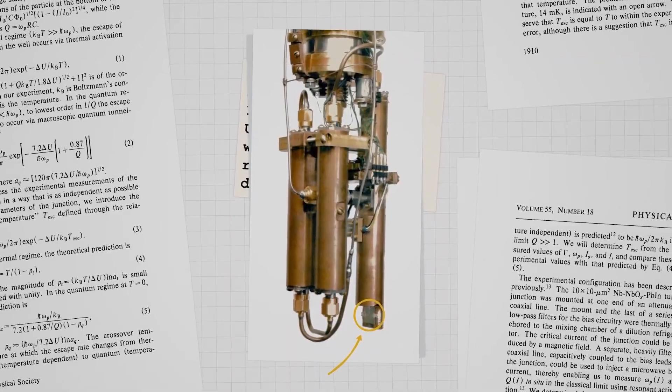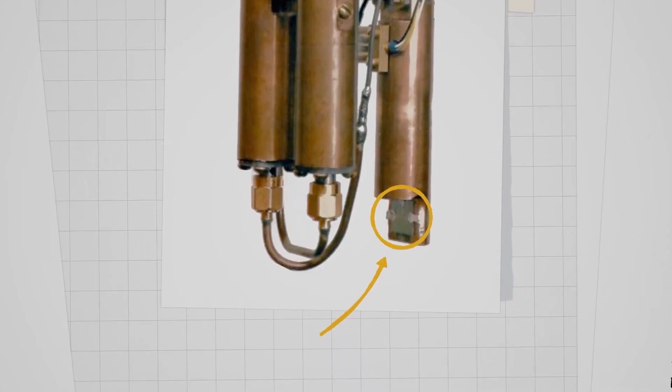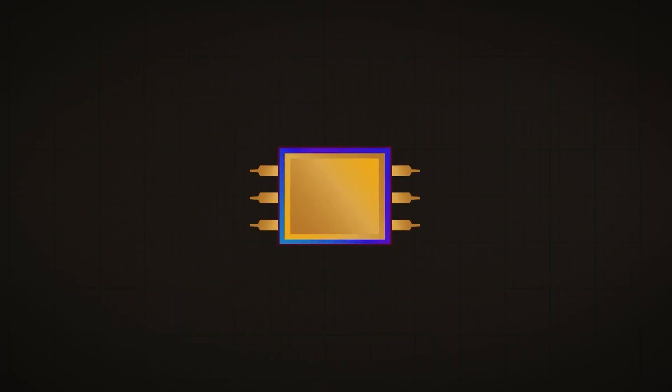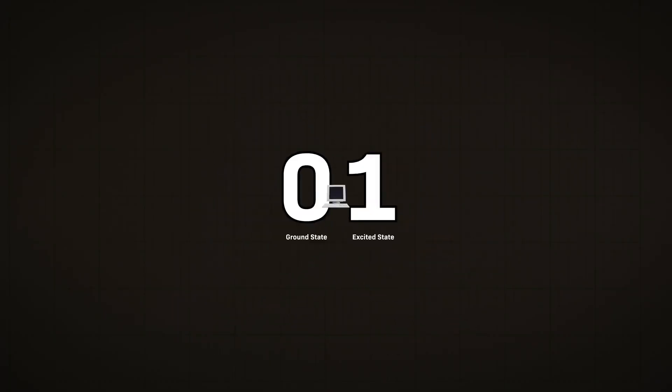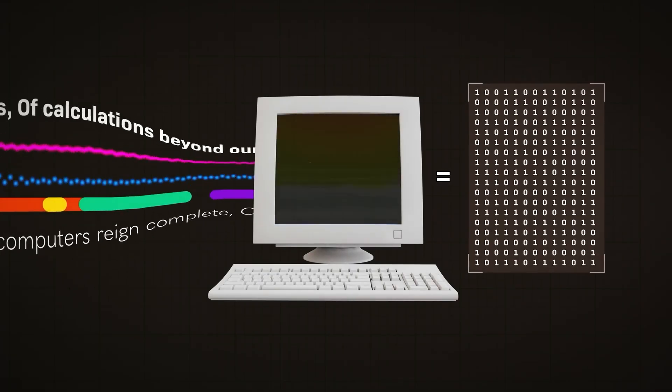To understand why this stands out, it's necessary to understand why quantum computing has remained experimental for so long. Traditional computers process information in a straightforward way. They move step-by-step, switching bits on and off, one operation after another. Every instruction follows a fixed path, and every calculation must be completed before the next one begins.